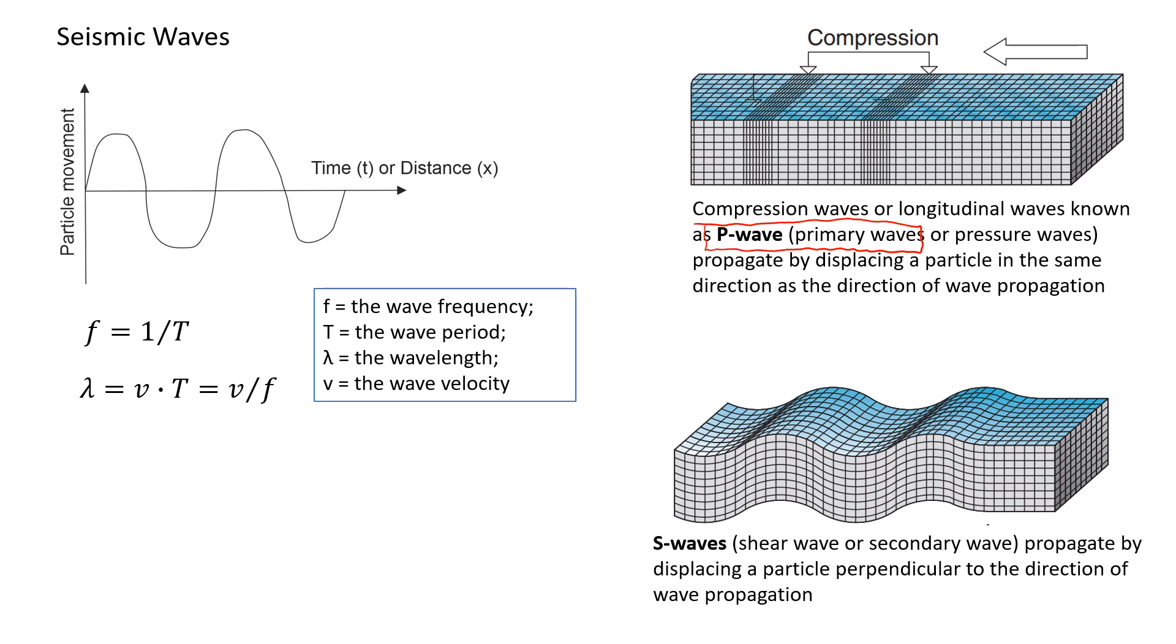So in this case, this wave will displace particles in the same direction of wave propagation. So it displaces in this one, you will see we have compressions. So it will compress the soil or rock mass.